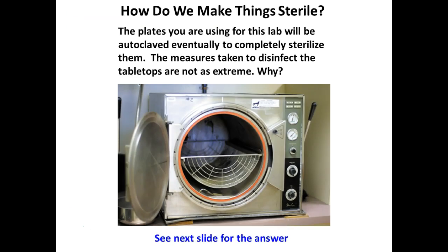How do we make things sterile? We use the autoclave — high pressure steam. The chamber locks, becomes pressurized with steam that can penetrate even through glass, and kills even endospores. We don't put lab benches in the autoclave because they're too large and we don't need them sterile — we just need them disinfected. Everything we work with has been sterilized, and everything we grow will be sterilized before disposal using the autoclave.